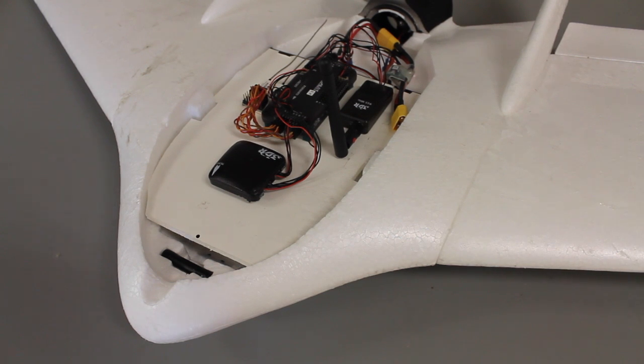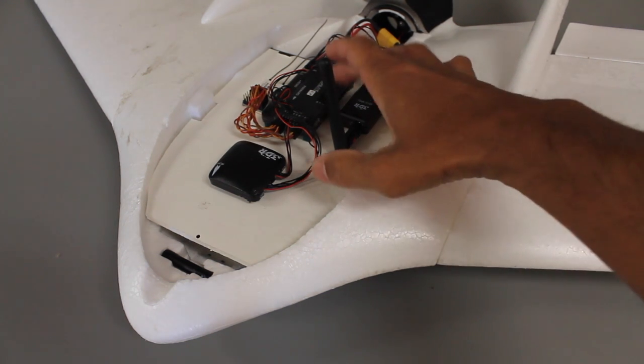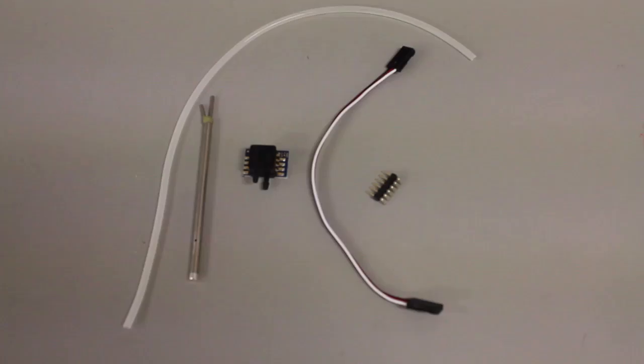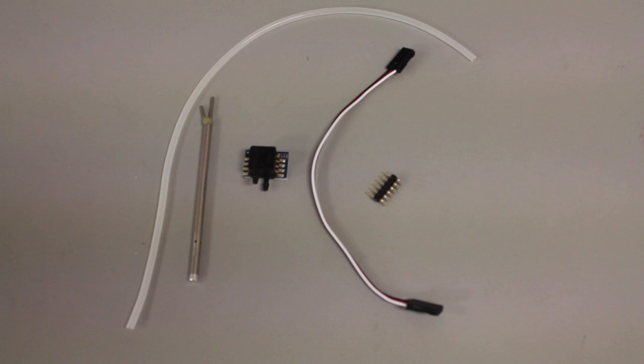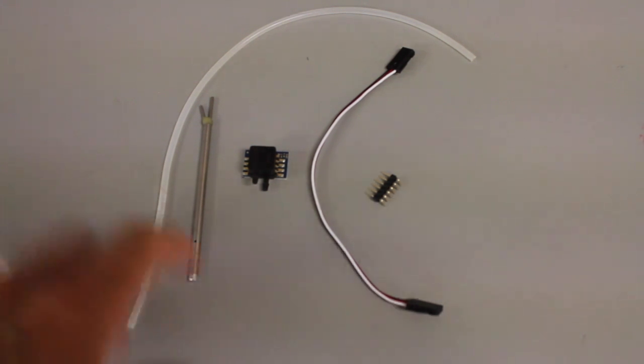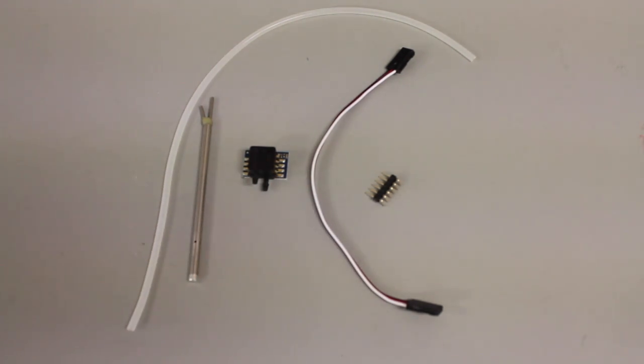This is my Phantom FPV wing that I've recently been flying with the APM 2.6 and this is the airspeed sensor kit that you can buy from 3D Robotics. I think I got it for about $27 and in this video I'm going to show how to set up your APM with the airspeed sensor.